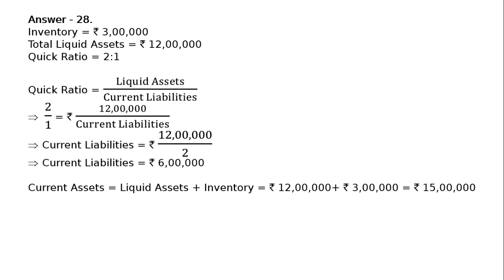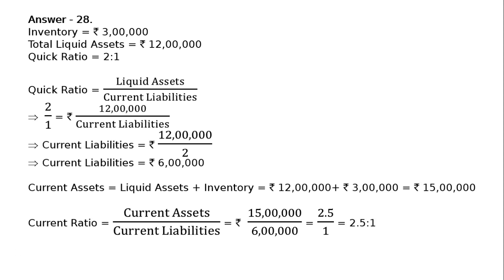Now we can find out current ratio. Current ratio is equal to current assets upon current liabilities, that is Rs. 15 lakhs upon Rs. 6 lakhs, which is equal to 2.5 is to 1. This is the final answer.